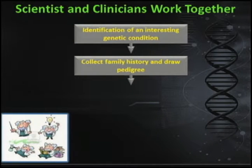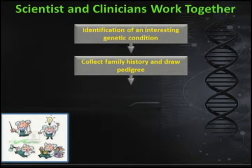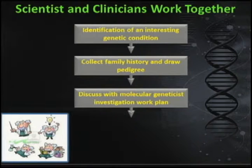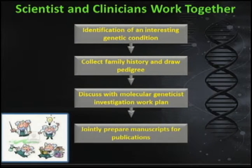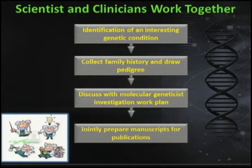A wrong pedigree would completely mislead the research protocol. We are lucky in the research department — we have a really good professional team of coordinators who can help with this. We then discuss the investigation work plan and put together the strategy for our experimental work in the lab. Once we have results and analyze everything, we jointly prepare manuscripts for publication. This is how scientists in the research department and clinicians in the hospital can work together to achieve something.